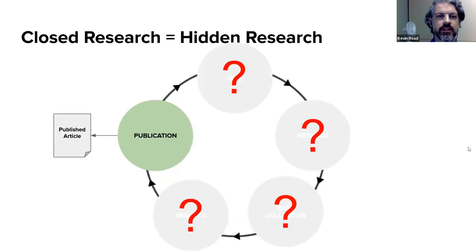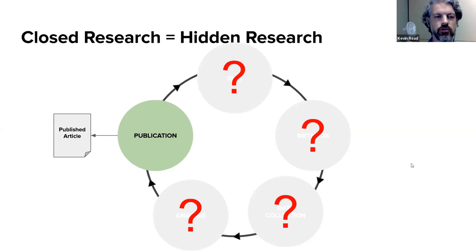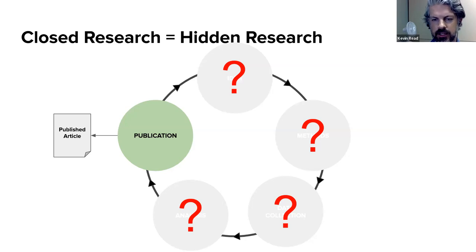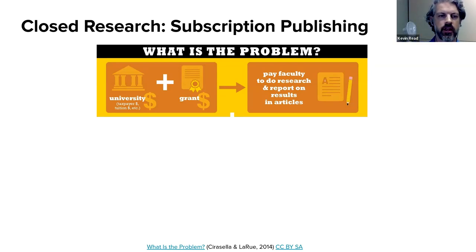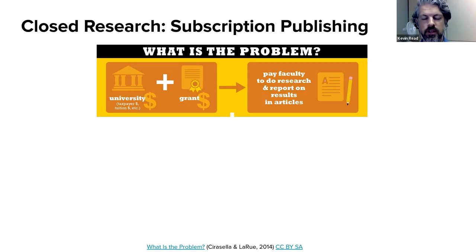One of the challenges is: if we don't know any of the information related to that publication and can't access it, how do we know it was done responsibly and ethically? The most common way to publish is through subscription publishing. The problem is that universities, taxpayers, or grants fund a researcher, they publish in a journal — and then the journal charges for access to that very article.